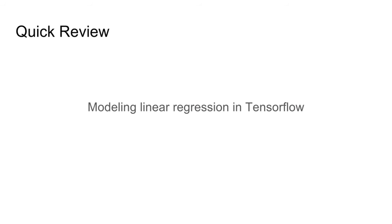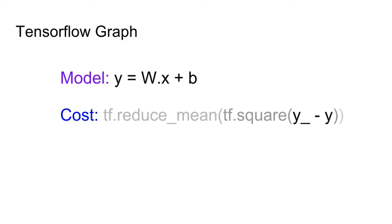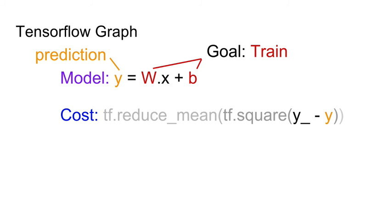In the previous video, we modeled linear regression in TensorFlow. We have to model the linear regression, which is y equals Wx plus b. We also have to model the cost, which is the least squared difference — think of cost as the absolute difference between the predicted value minus the actual value. Y is our prediction, and to get a good prediction we must have good values of W and b, which we need to train.